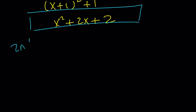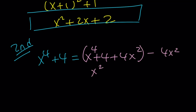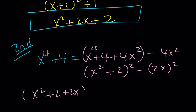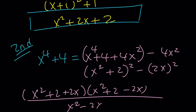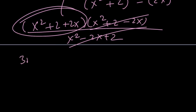The second method will be much faster using what's called the Sophie Germain identity. We write x to the fourth plus 4 as a sum of two squares and add something helpful to make it a perfect square: x to the fourth plus 4 needs 4x squared, so it becomes x squared plus 2 squared minus 2x squared, which is a difference of two squares: x squared plus 2 plus 2x times x squared plus 2 minus 2x. Divided by x squared minus 2x plus 2, these two are the same, so we end up with x squared plus 2x plus 2.